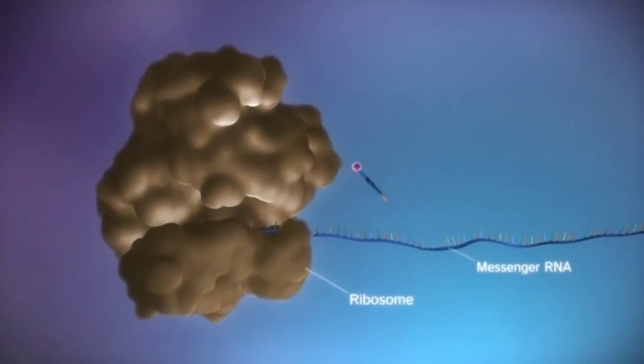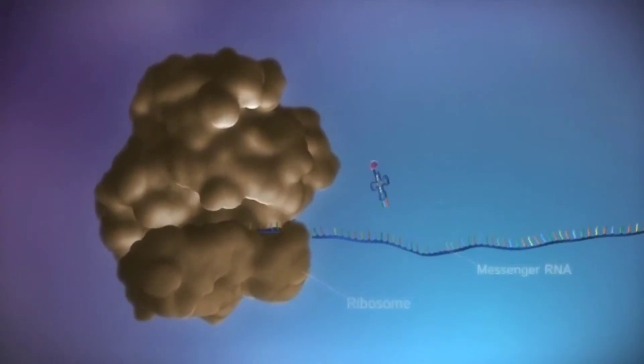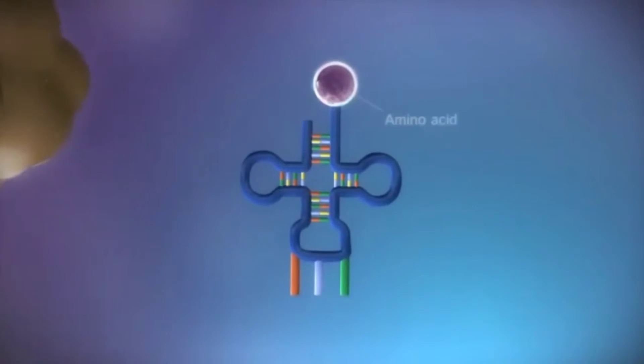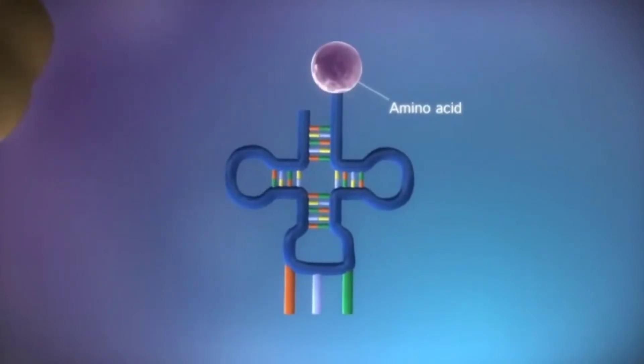The ribosome reads the code in the messenger RNA to produce a chain made up of amino acids. There are 20 different types of amino acid.